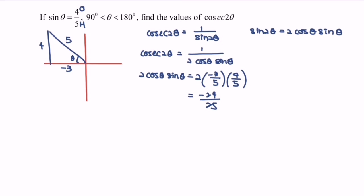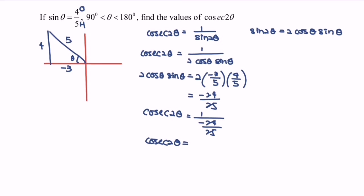Substituting the value, csc 2θ equals 1 over negative 24/25. So finally, csc 2θ equals negative 25 over 24. Thanks for watching.